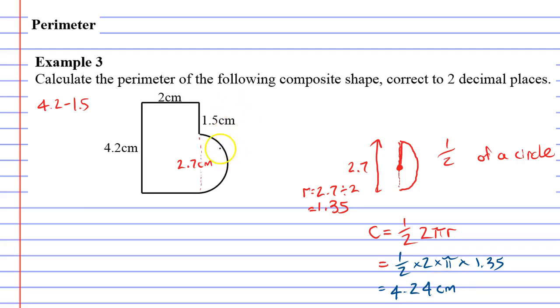So let's come over here and we've figured out that the distance around the curved part is 4.24 cm. So we've almost got all our sections of our shape. We've got this section, we've got our 1.5, our 2, and our 4.2.